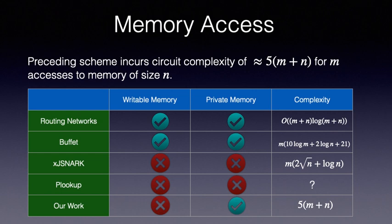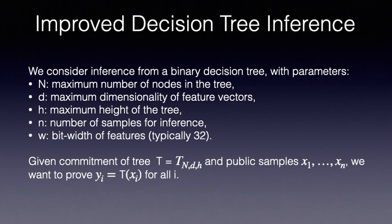We can also see here that our memory access construction compares favorably with prior construction for the case of read-only access. Amortized over large number of accesses, we only pay about 5 gates per access.